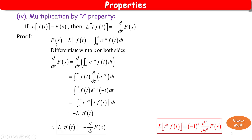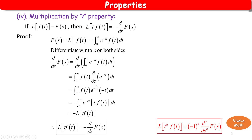Proof using the standard formula: F(s) equals the integral from 0 to infinity of e to the power minus st times f(t) dt. Now, differentiate both sides with respect to s. So d by ds of F(s) equals d by ds of this integral. On the right-hand side, we take d by ds inside the integral, giving us the partial derivative with respect to s of e to the power minus st.